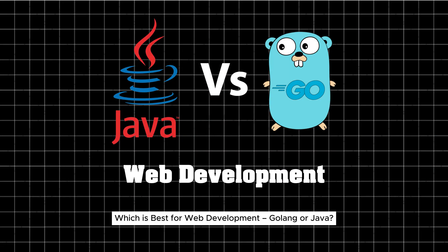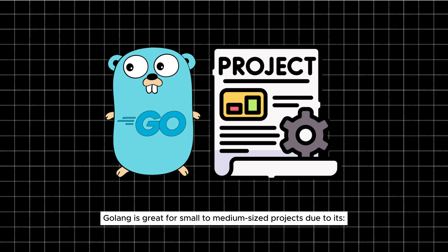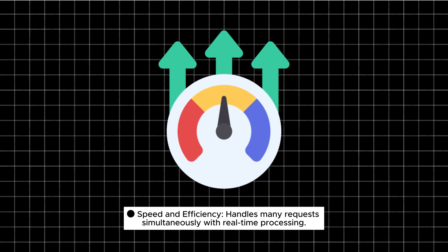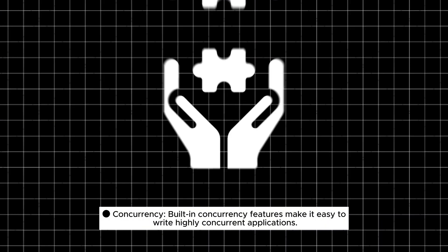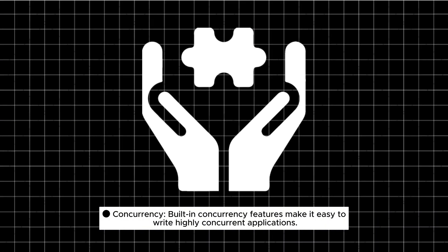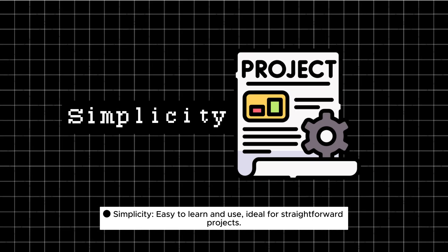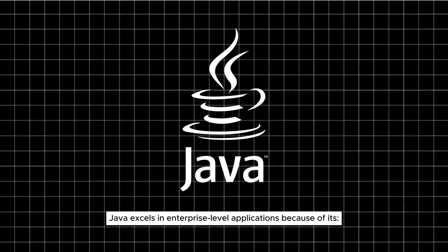Which is best for web development — Go or Java? Go is great for small to medium-sized projects due to its speed and efficiency. It handles many requests simultaneously with real-time processing. Built-in concurrency features make it easy to write highly concurrent applications. Its simplicity makes it easy to learn and use, ideal for straightforward projects.